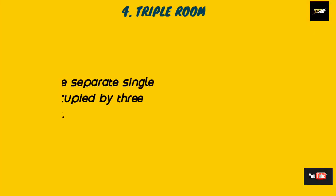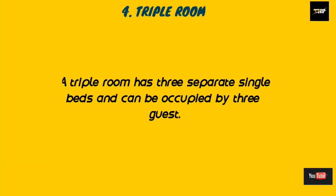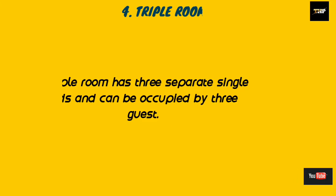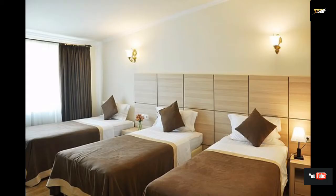The fourth one is the triple room. A triple room has three separate single beds and can be occupied by three guests. Here are some images of the triple bedroom.